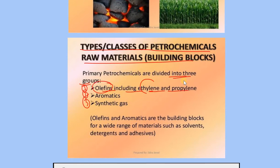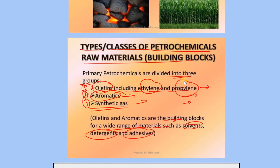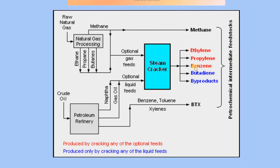Primary petrochemicals are the building blocks for a wide range of materials such as solvents, detergents, and adhesives. Aromatics and olefins are the final products. If you look at the block diagram — starting from natural gas, you can process ethane, propane, and butane.